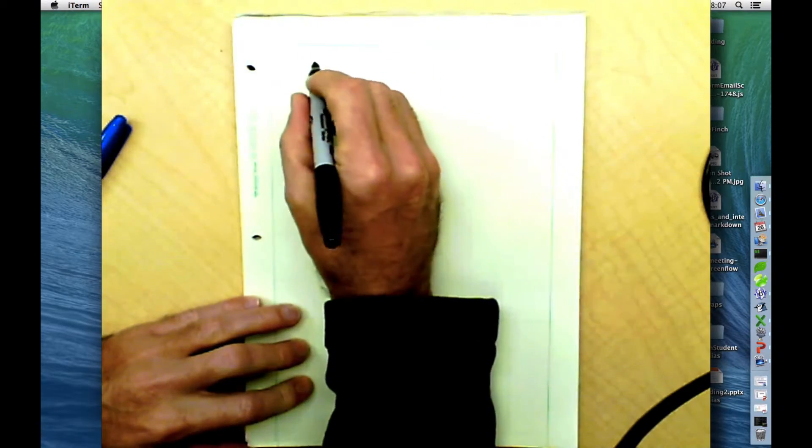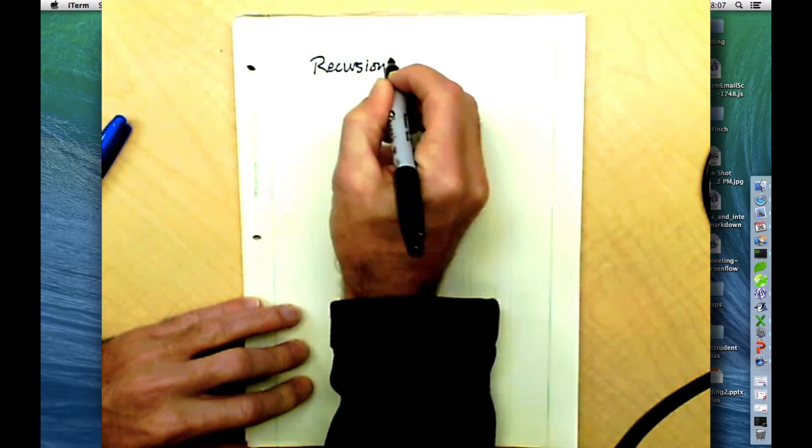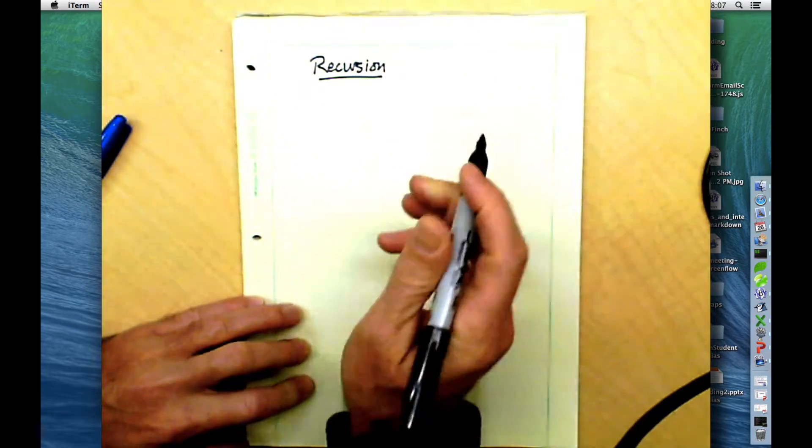We're going to take a moment here to talk about recursion. Recursion is simply the process of working with an object in a self-referential way.